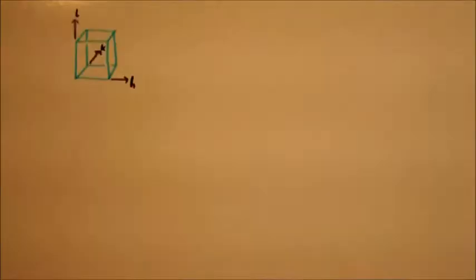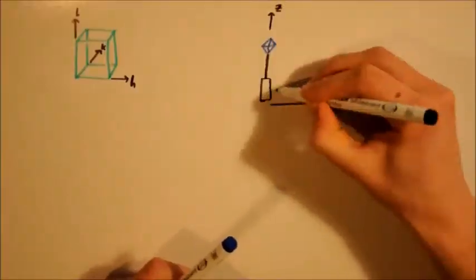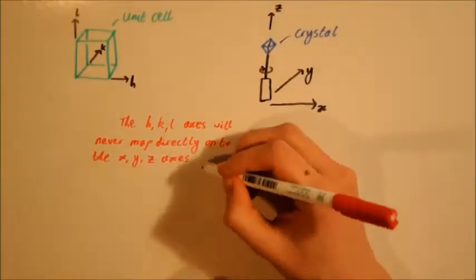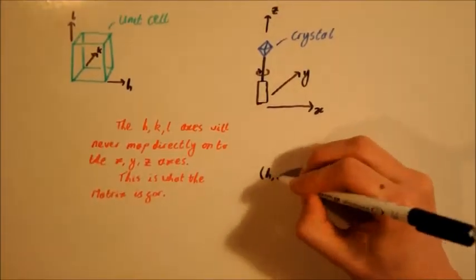So now that you have your crystal mounted, you need to determine your unit cell, and this is done by collecting preliminary diffraction data often referred to as the matrix run. This only takes a matter of minutes.